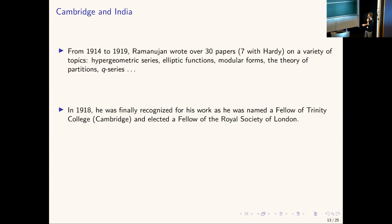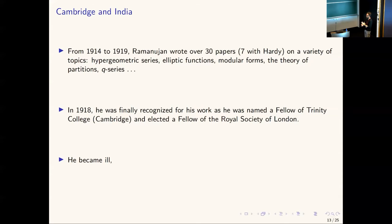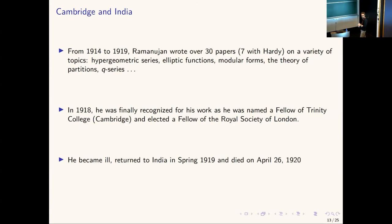In 1918, Ramanujan was recognized for his work: he was named a Fellow of Trinity College in Cambridge and elected a Fellow of the Royal Society in London. He had been ill — his last two years in Cambridge were spent in a nursing home, partly due to being a strict vegetarian during wartime in Britain. In an effort to improve his health, he returned to India in February 1919, but unfortunately his health did not improve, and he died on April 26, 1920, at the age of 32.